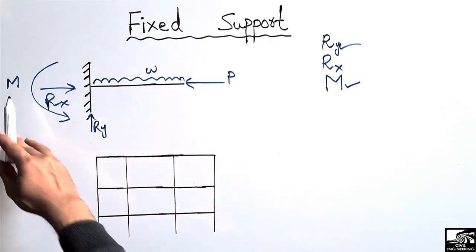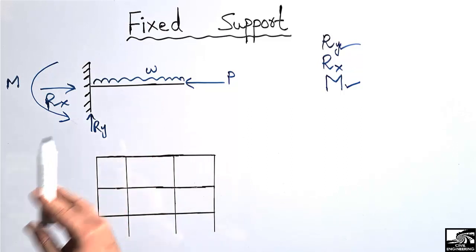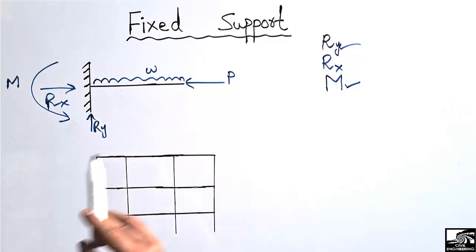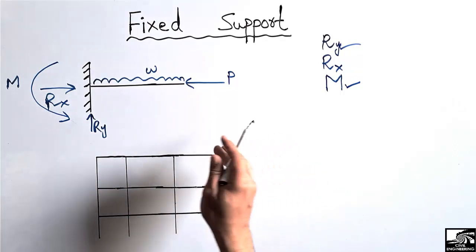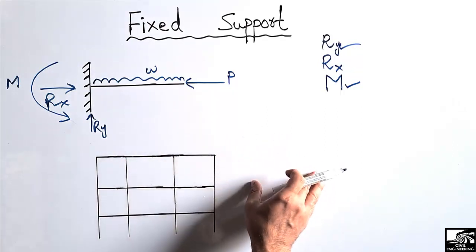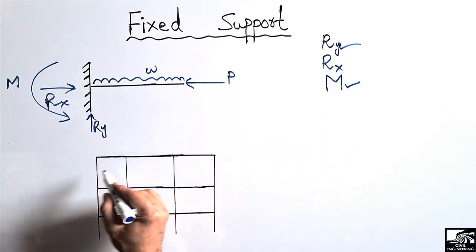So the fixed support provides three different types of resistance: the moment M, the horizontal reaction Rx, and the vertical reaction Ry. Now, where do we use fixed supports practically?